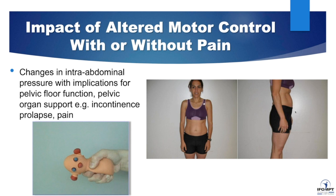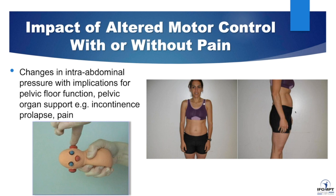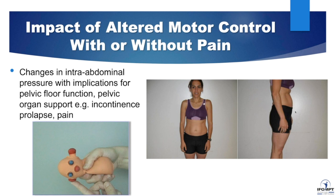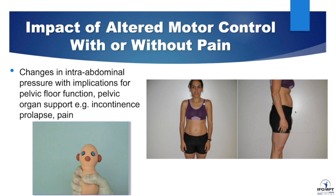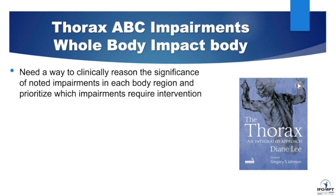We also see implications for continence and pelvic organ support. When you have overactivation of the superficial muscles, whether in your back or the abdominal walls, it often leads to increases in intra-abdominal pressure, and this can have huge implications for function of the pelvic floor, pelvic organ support, and can lead to incontinence, pelvic organ prolapse, and pelvic pain. We can't just look at one area of the body in the presence of pain or incontinence or prolapse. We have to look at the relationships and need a way to clinically reason the significance of noted impairments — poor control, poor mobility, poor alignment in each body region — and then be able to prioritize which impairment requires intervention.